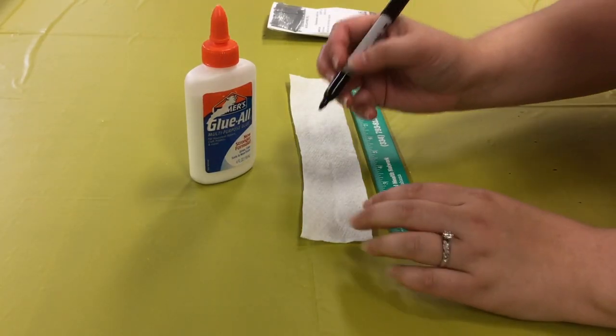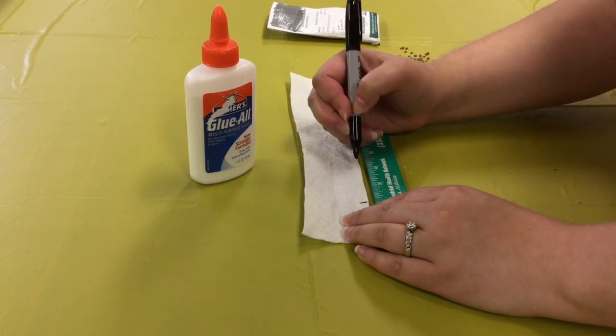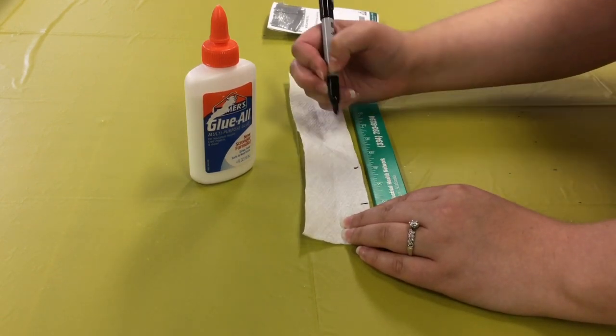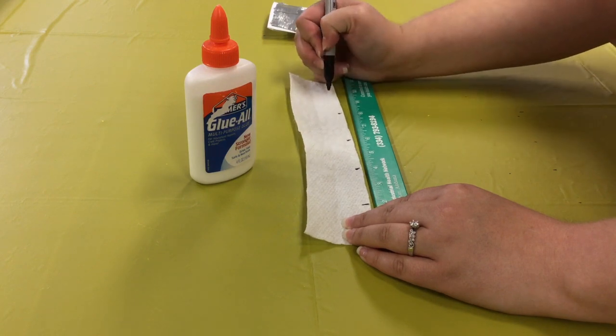Create a lengthwise perforation in the paper towel, then mark the spaces for seeds based on the seed spacing you have determined.